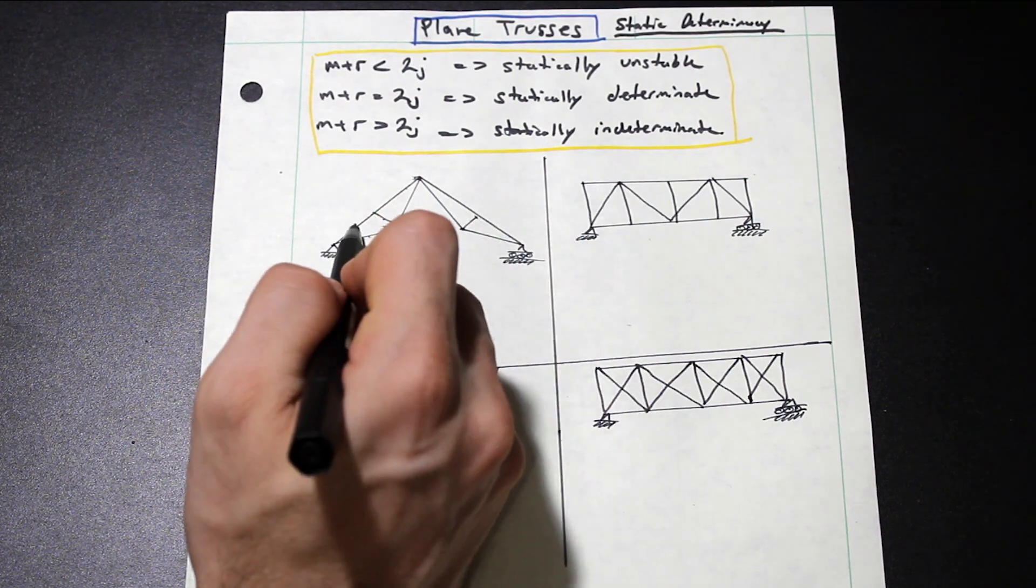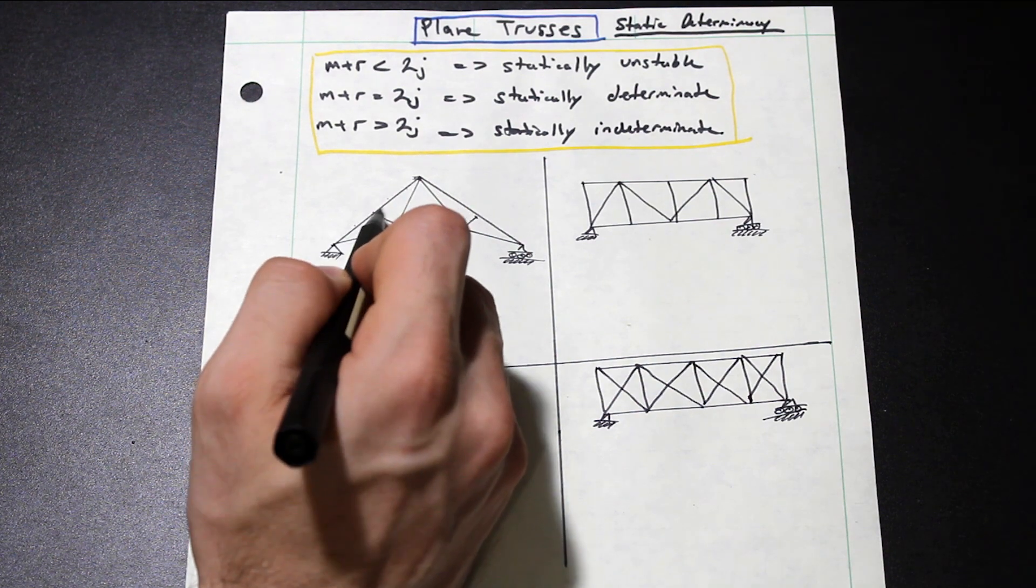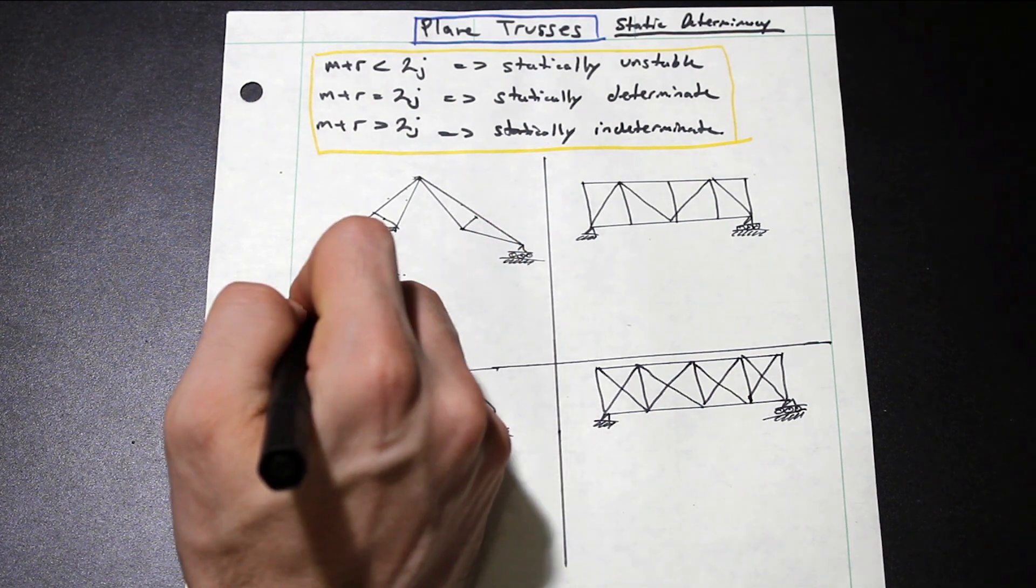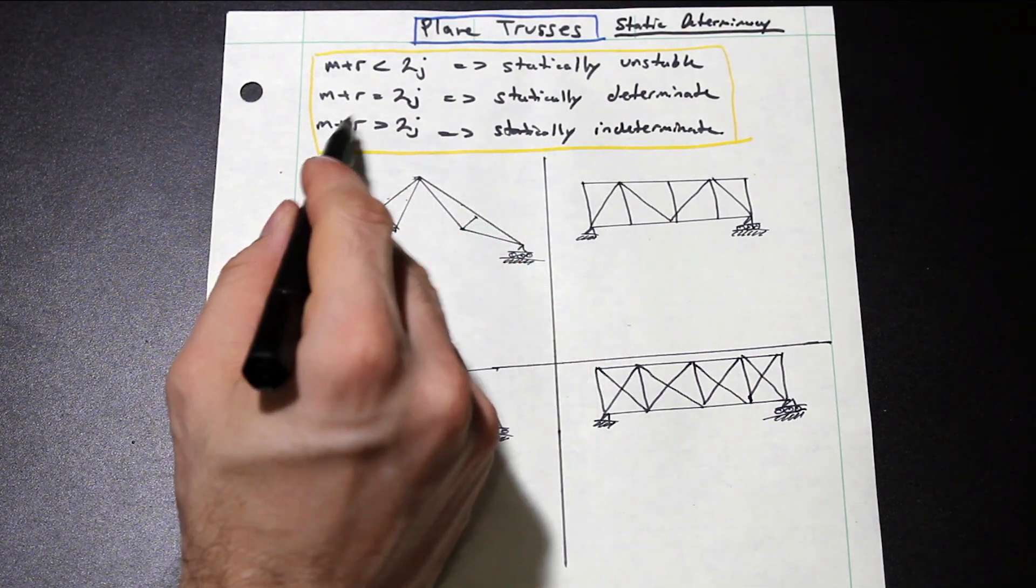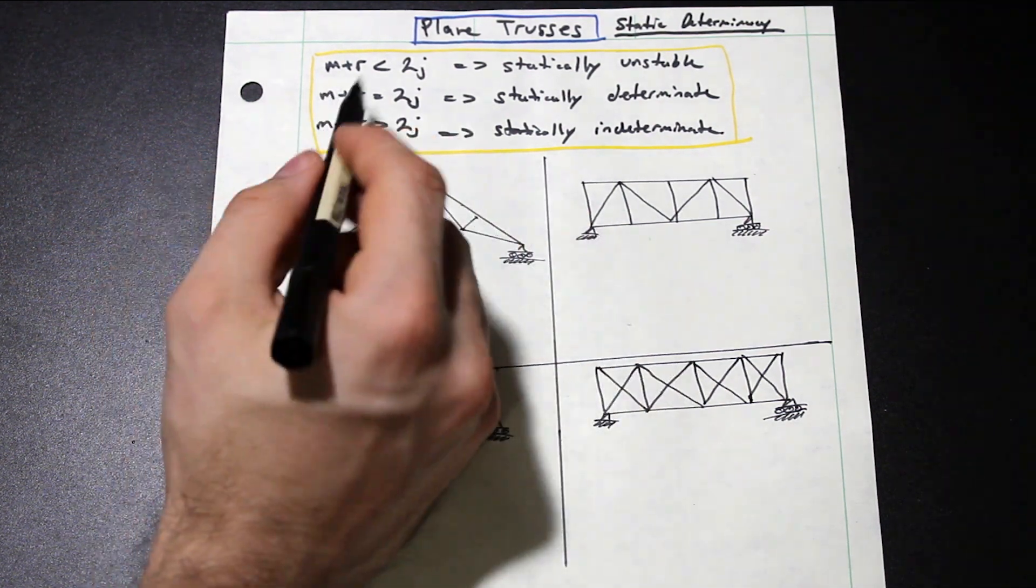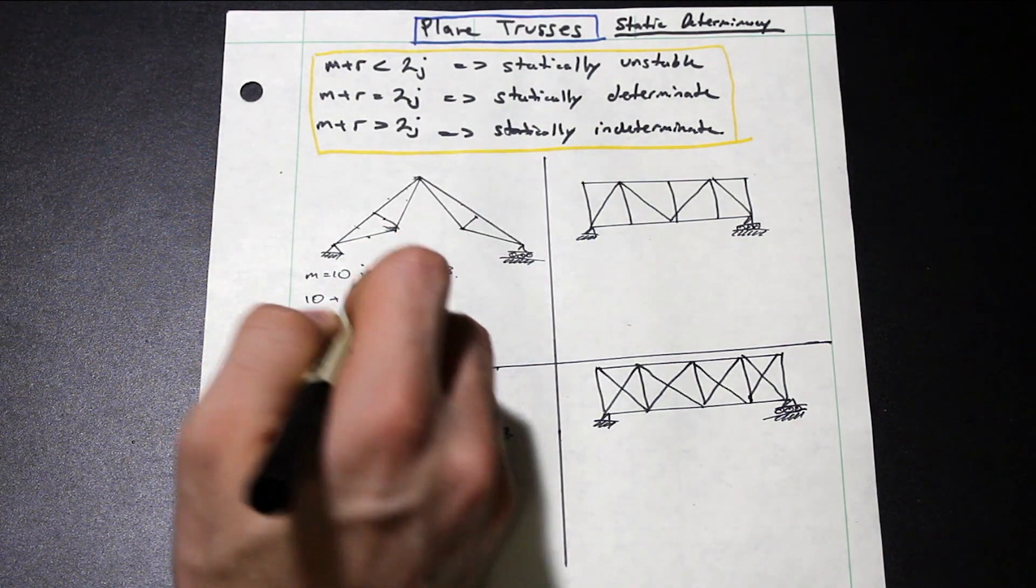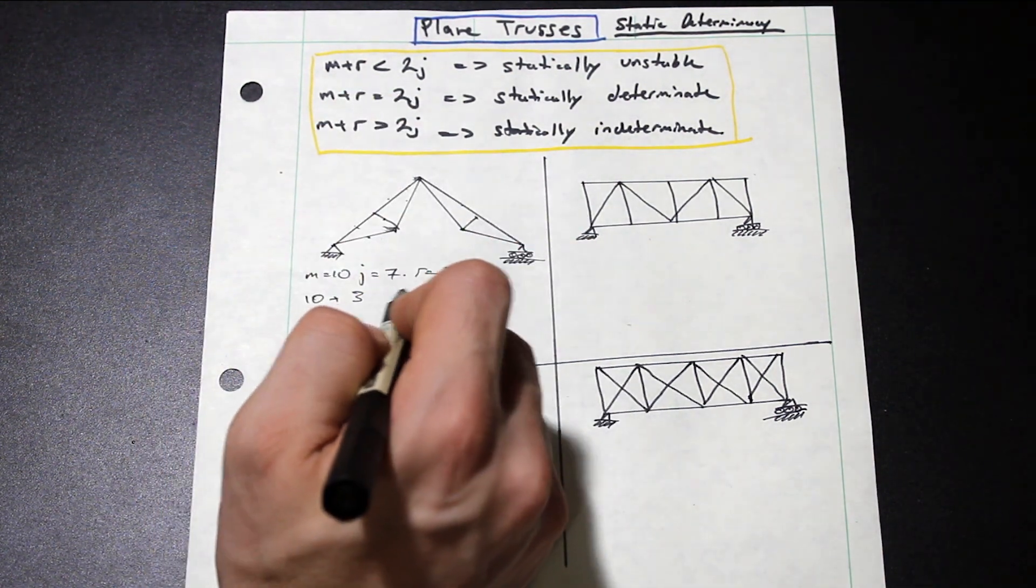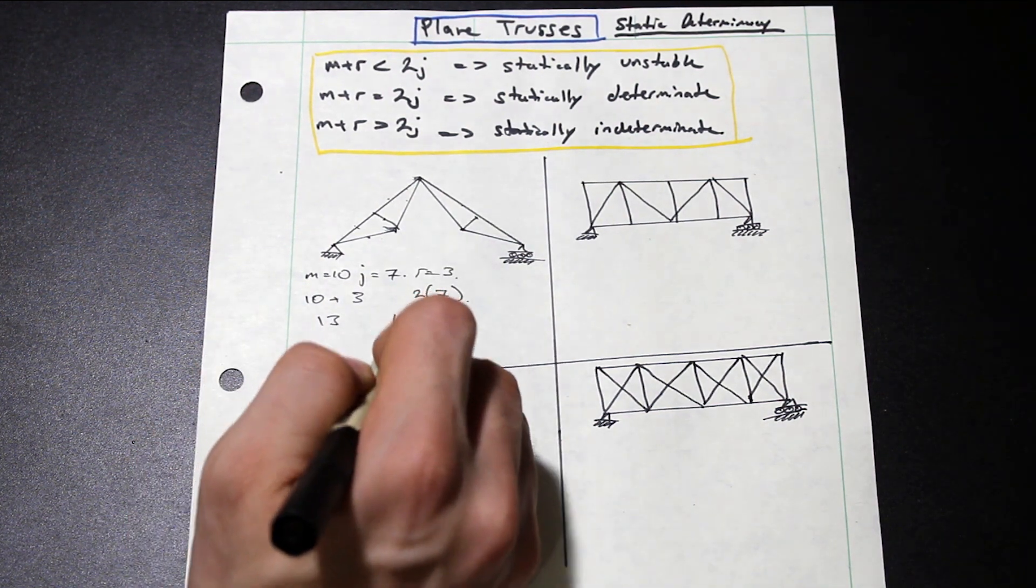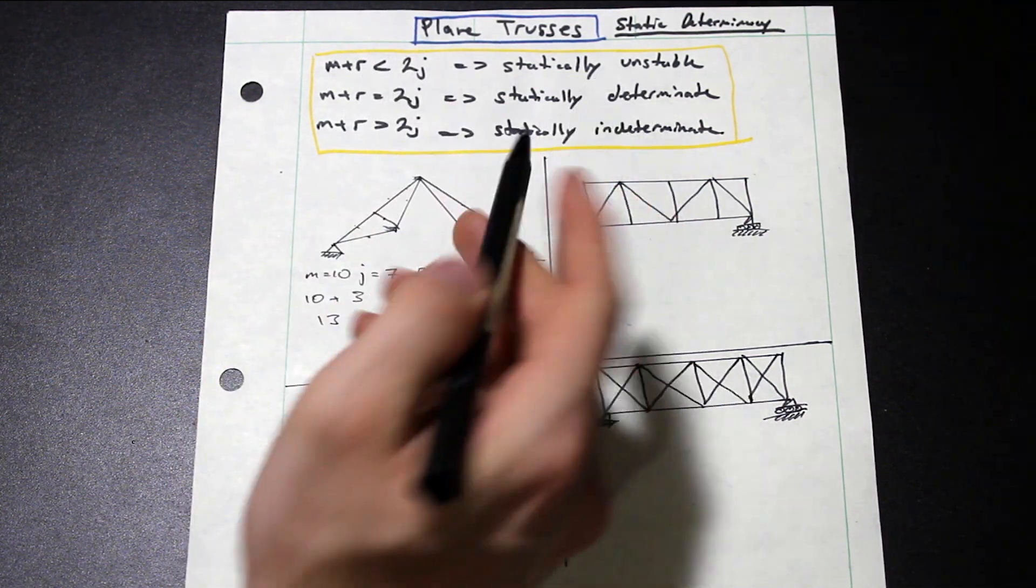How many members do we have? Well, we have 1, 2, 3, 4, 5. So this is 2, right? This is a non-continuous member here. So we count that as 2. 1, 2, 3, 4, 5, 6, 7, 8, 9, 10. So M is equal to 10. How many reactions do we have? We have a pin here and a roller. So our R is equal to 3. And if we go ahead and plug this in, we have 10 plus R, which is 3. And on the right side, we have 2J. So that's 14. So we have 13 and 14. Since the right side of the equation is greater than the left side, we take a look up here and we see that this is unstable.